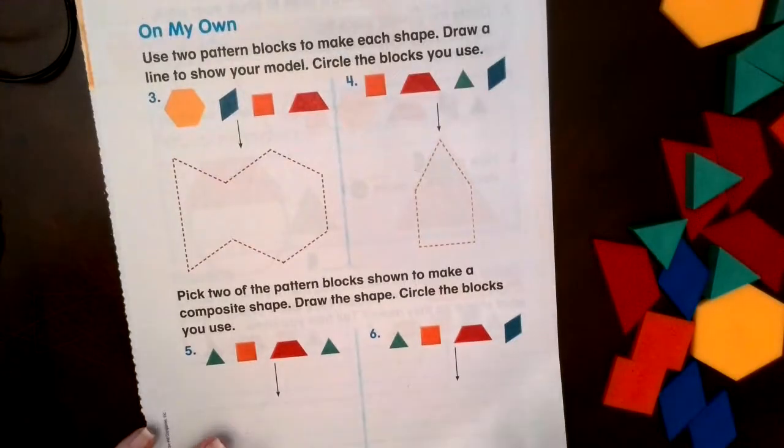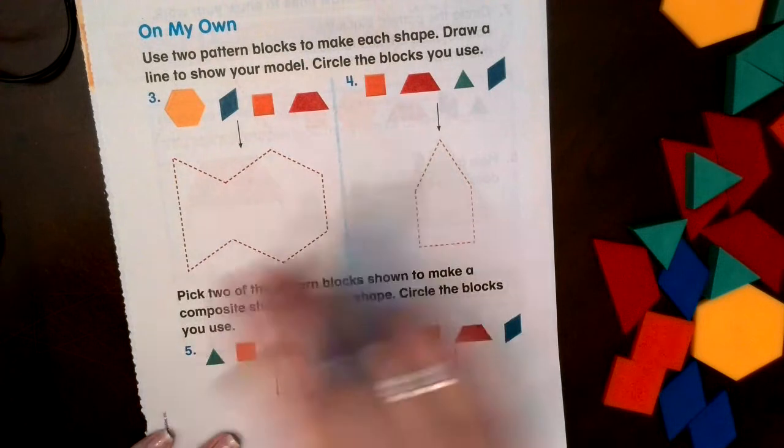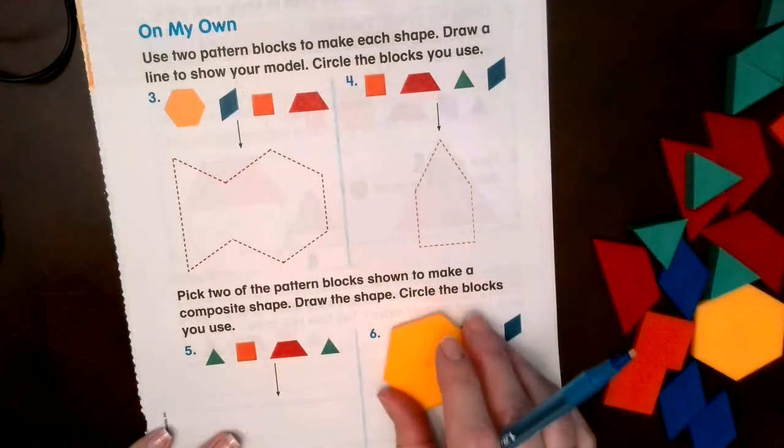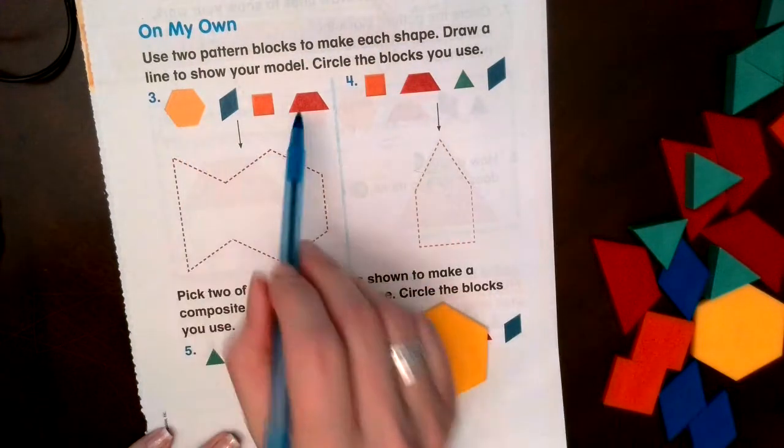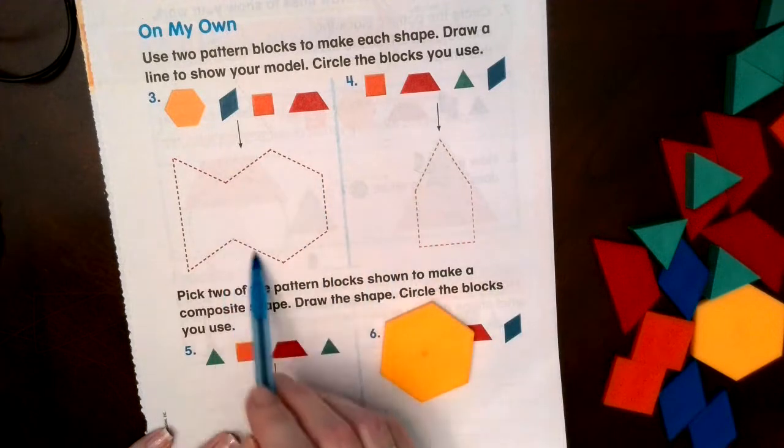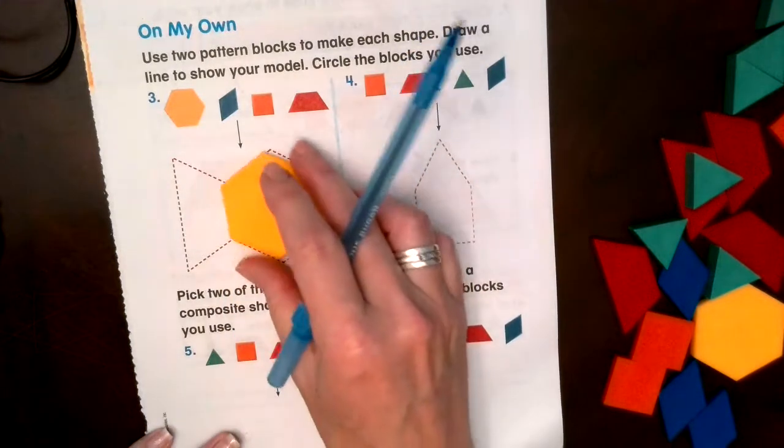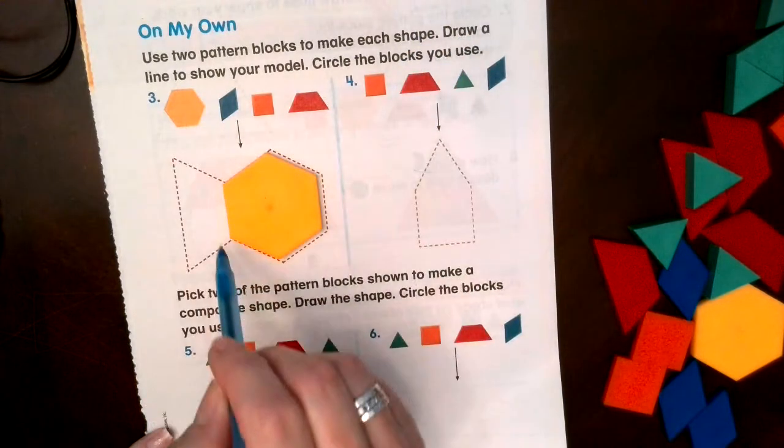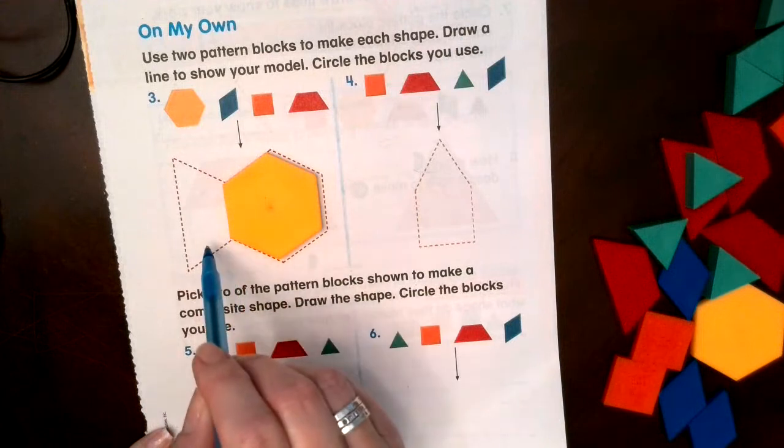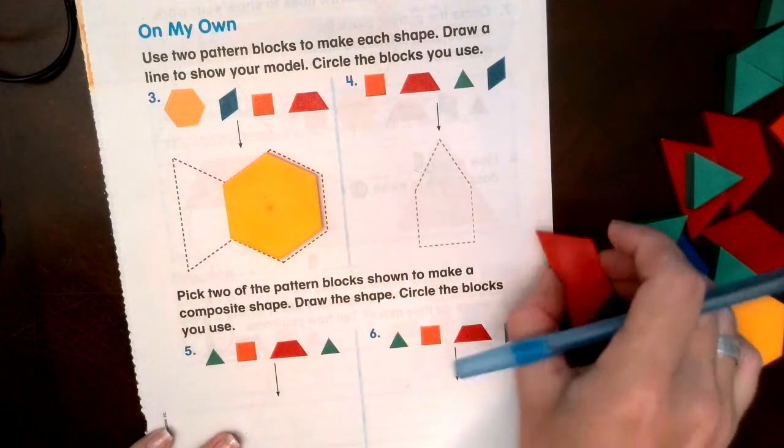On my own, it says use pattern blocks to make each shape. I know you don't have these at home, so we're gonna do it together and just like the other one we're gonna circle the shapes we use. So right here I can kind of see that hexagon shape, and then what shape do you see here? That's right, a trapezoid. It looks like a fish, doesn't it?